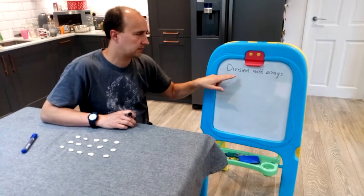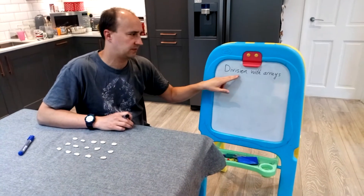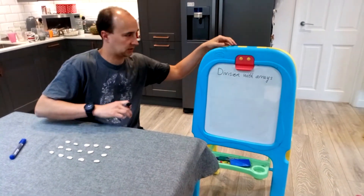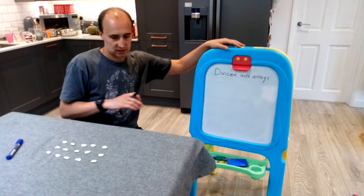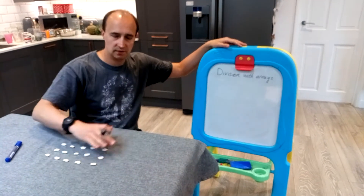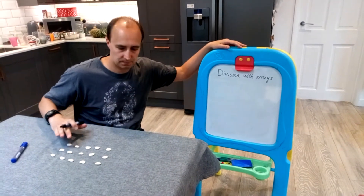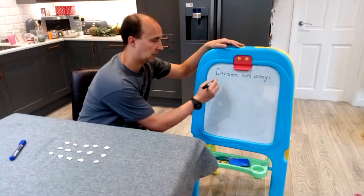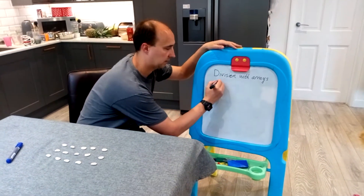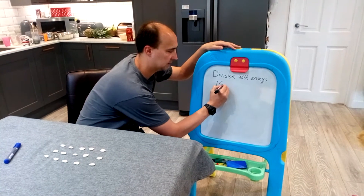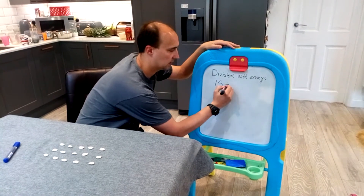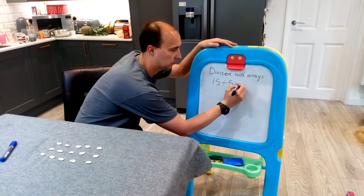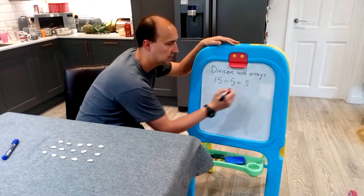Hi there. We're going to finally look at division with arrays in the abstract form. Once the children have used the concrete apparatus to make calculations like 15 divided by 5 equals 3,